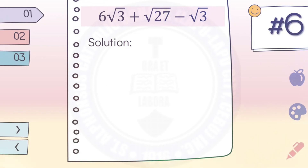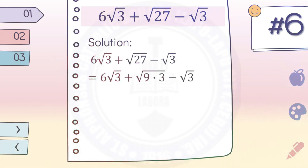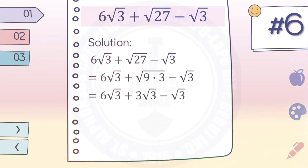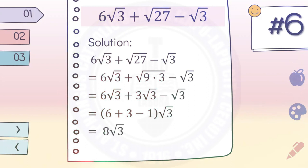Number six: six square root of three plus square root of twenty-seven minus square root of three. First simplify each term. Square root of twenty-seven becomes square root of nine times three, since nine is the perfect square factor of twenty-seven. So we have: six square root of three plus three square root of three minus square root of three. All three terms share the common radical square root of three. Combining coefficients: six plus three minus one equals eight. Final answer: eight square root of three.